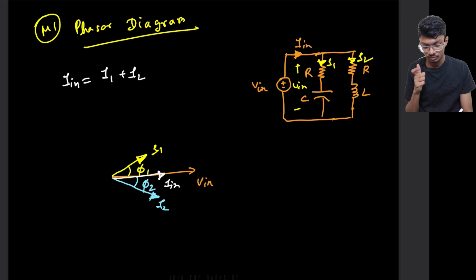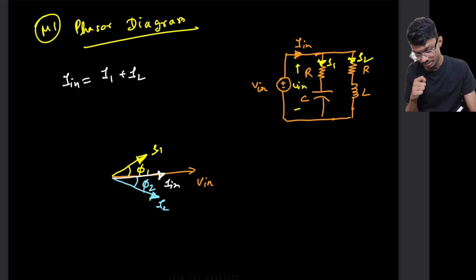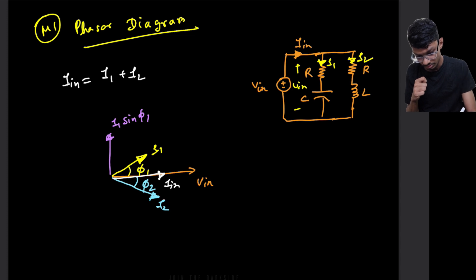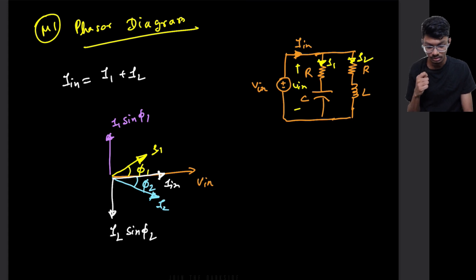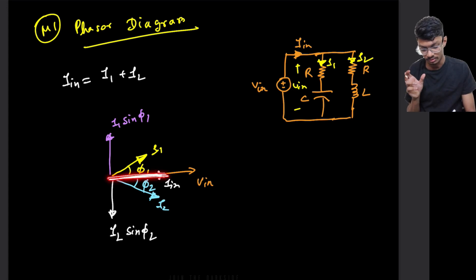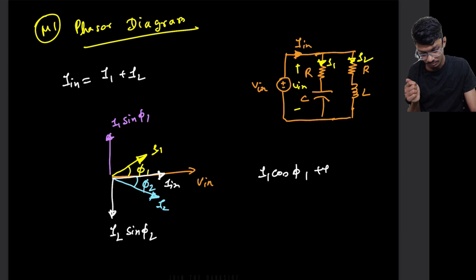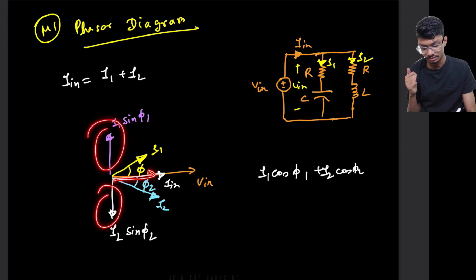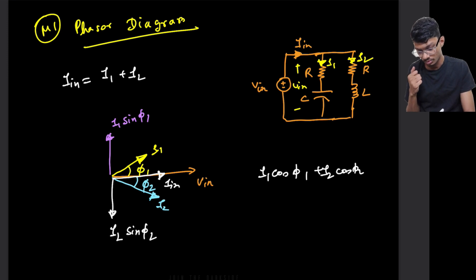If we break I1 and I2 into rectangular components, we get a component I1·sin(phi1) leading and I2·sin(phi2) lagging. For Iin to be in phase with Vin, these perpendicular components must cancel each other out, leaving only the reference-direction components: I1·cos(phi1) + I2·cos(phi2). So we must equate the magnitudes: |I1|·sin(phi1) = |I2|·sin(phi2).